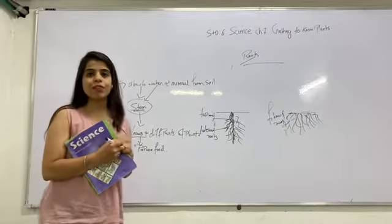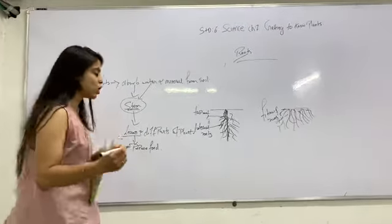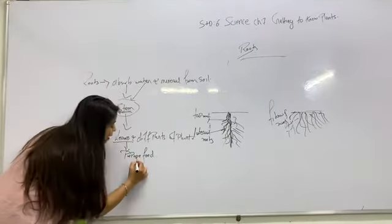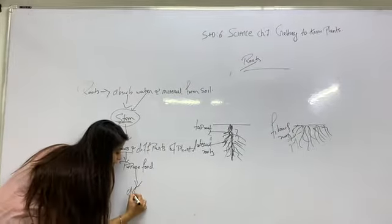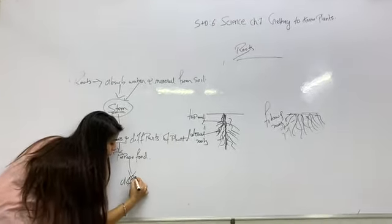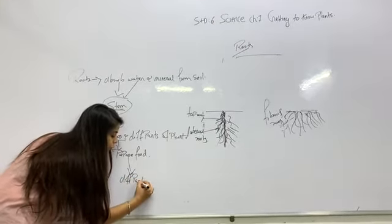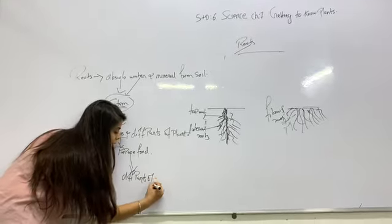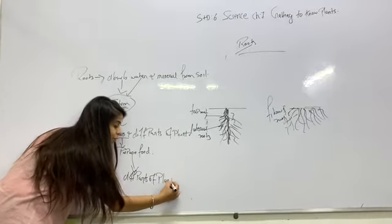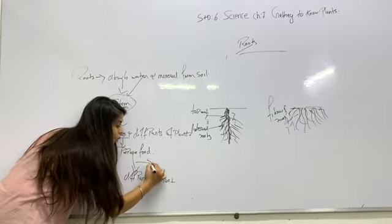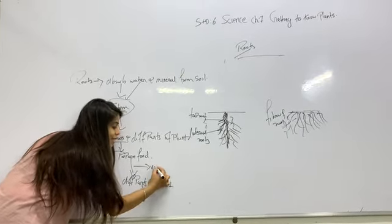The food prepared by leaves is distributed to different parts of the plant via the stem.